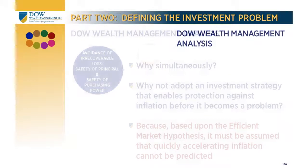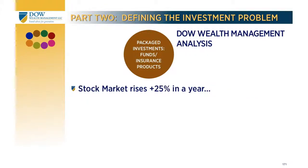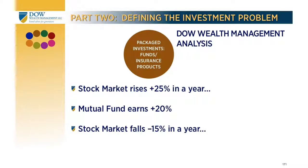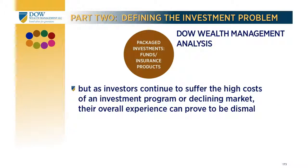Now let me discuss the last of the elements. Over the years we have observed that many investment products badly underperform the markets in which they invest. For example, during a period when the stock market rises 25%, a mutual fund might underperform and earn just 20%. Or if the market falls 15%, the mutual fund might tumble 20% — earning less during the good years and losing more during the down years. During prosperous times, many investors don't even notice the underperformance because they're earning high returns. Unfortunately, as investors continue to suffer the high costs of an investment program during a stagnant or declining market, their overall investment experience can prove to be dismal.